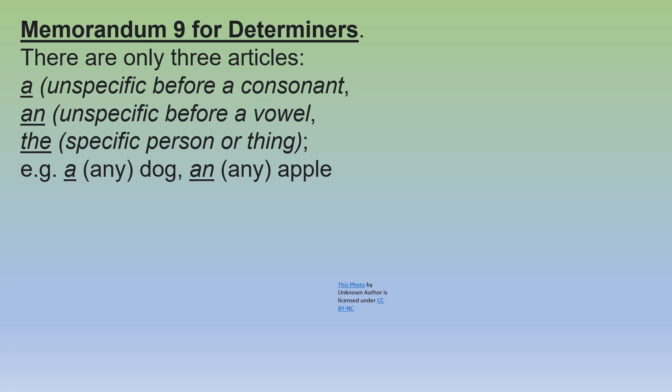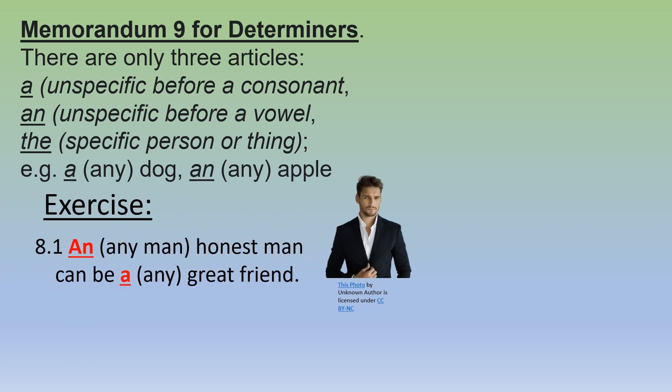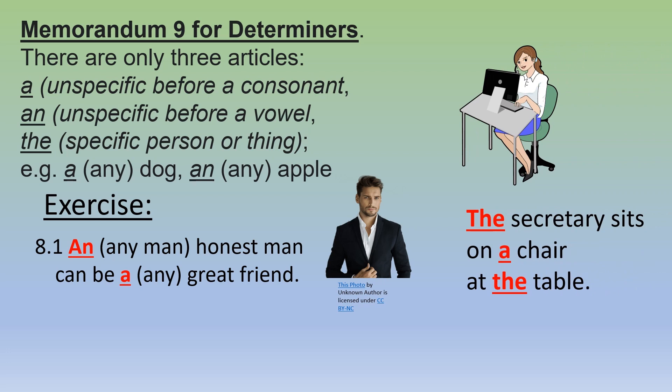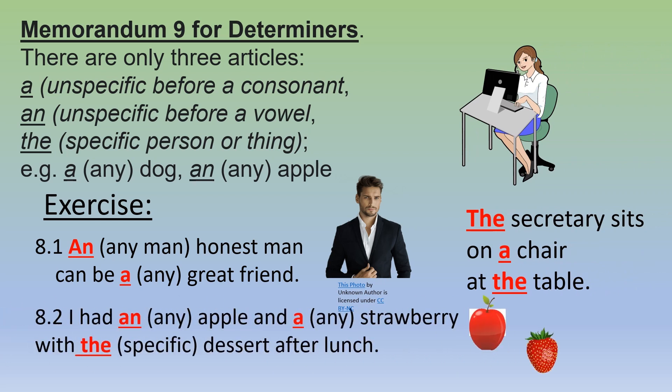Memorandum nine — determiners. There are only three articles: 'a' — unspecific before a consonant; 'an' — unspecific before a vowel; 'the' — specific person or thing. For example, a dog and an apple. Exercise answers: 8.1 — An honest man can be a great friend. The secretary sits on a chair at the table. 8.2 — I had an apple, a strawberry, with the dessert after lunch.